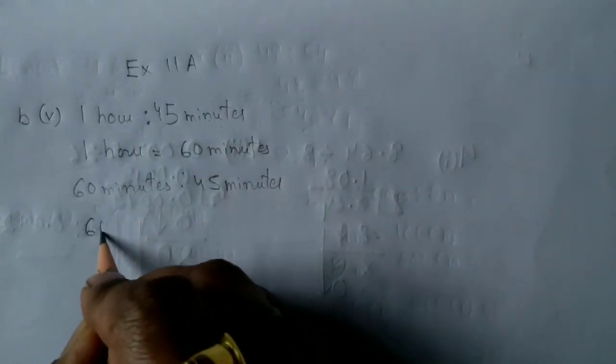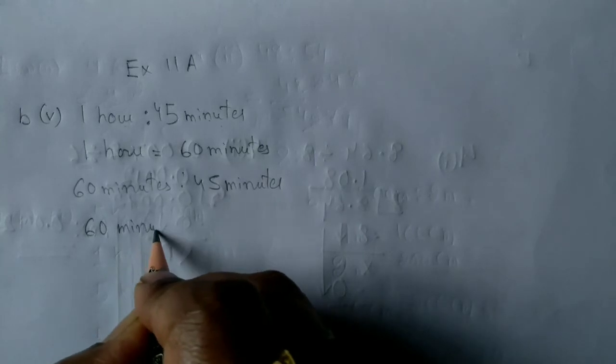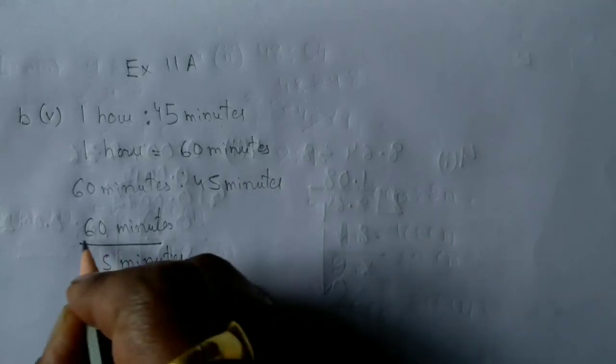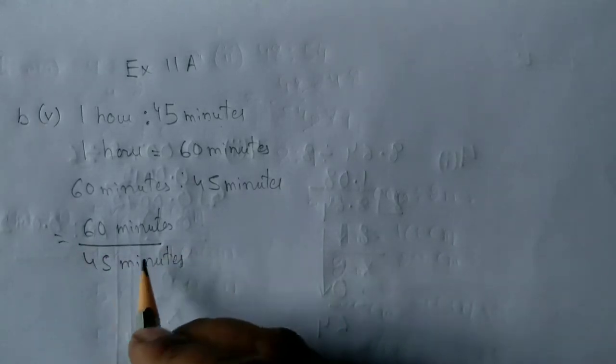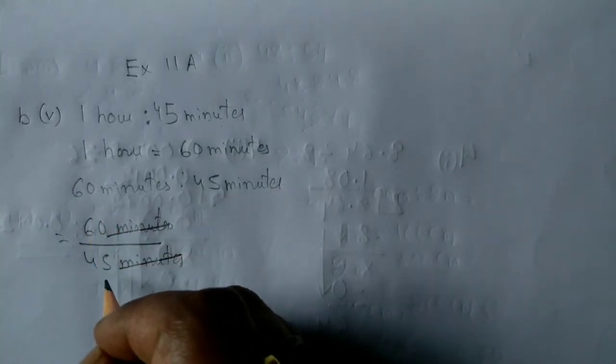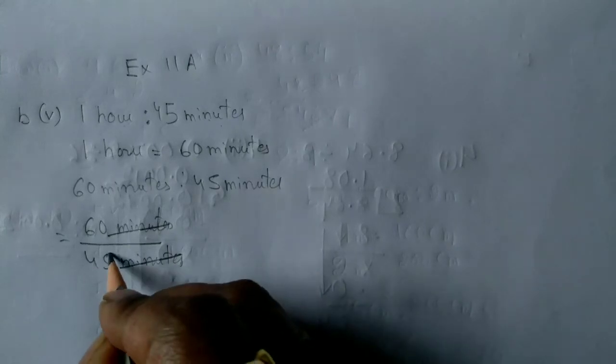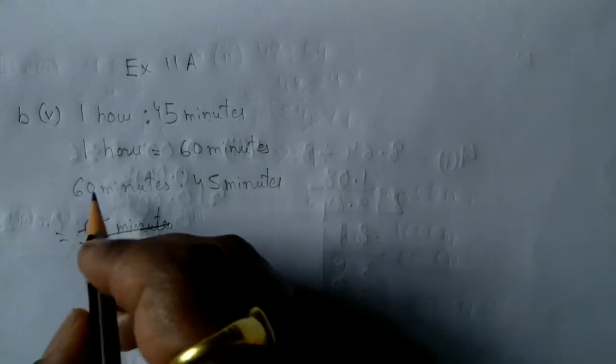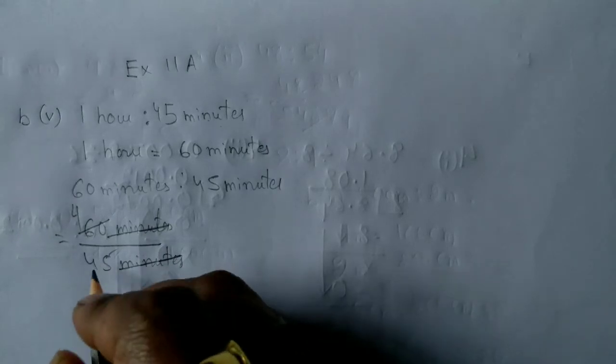So I can write 60 minutes upon 45 minutes. This is how we are supposed to write. Minutes and minutes gets cancelled. This can be cancelled by 15. 15 times 4 is 60 and 15 times 3 is 45. So my answer will be 4 is to 3. If you cannot do the cancellation, please try with smaller numbers like 3 and 5.